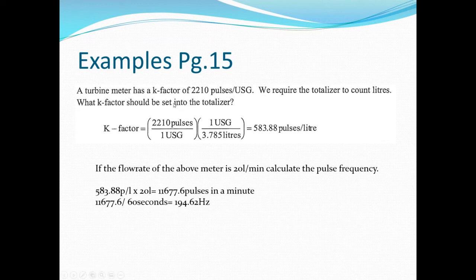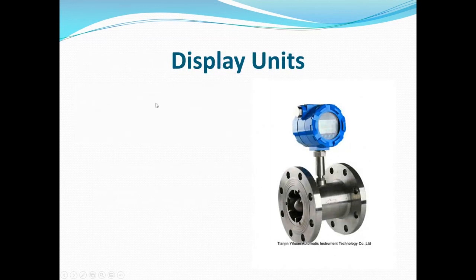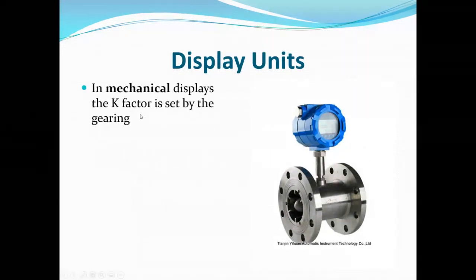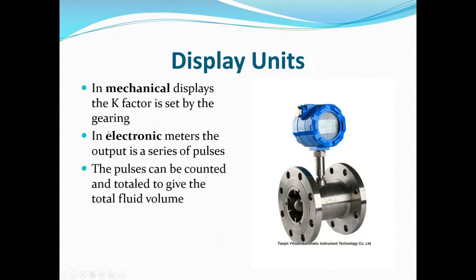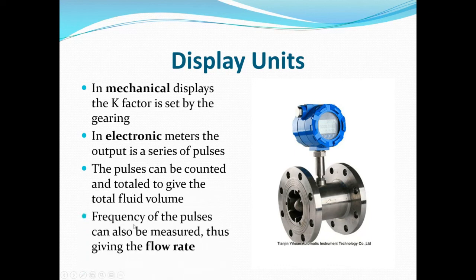The display unit: in mechanical displays the K-factor is set by gearing, but that's no longer really relevant. In electronic meters, the output is a series of pulses — you'll usually see a pulse output on a turbine meter. Total pulses give total fluid volume, and pulse frequency gives flow rate. Looking at the picture on screen — gas or liquid? Hopefully you'll say gas.